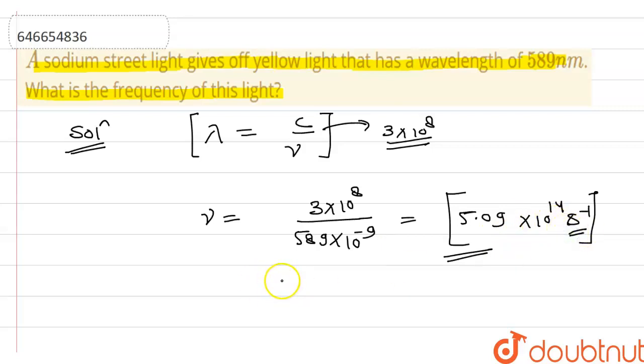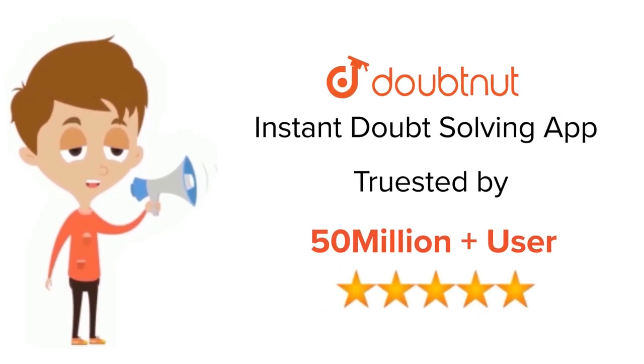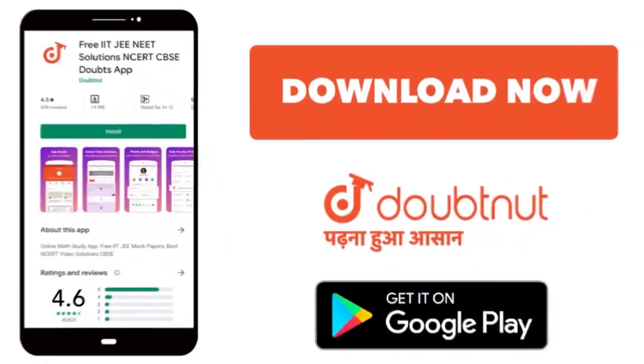Okay guys, so I hope it is clear to you how to find by using this formula and thank you very much. For class 6 to 12, IIT-JEE and NEET level, trusted by more than 5 crore students. Download Doubtnet app today.